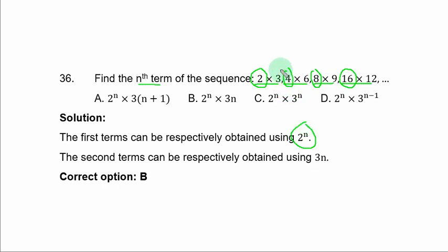Then, second term in each term. You have 3. Now, you have 6. 3 times 2 is 6. 3 times 1 is 3. You have 9. 3 times 3 is 9. You have 12. 3 times 4 is 12. So, you have 1, 2, 3, 4 is also present. So, you can use 3n to obtain the second term in each term.